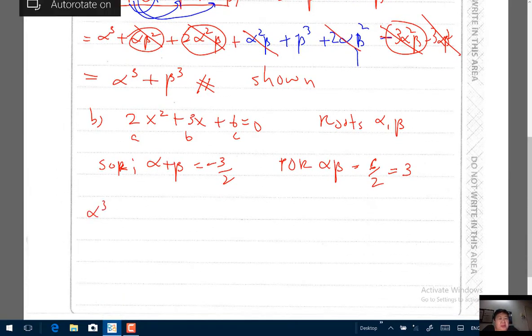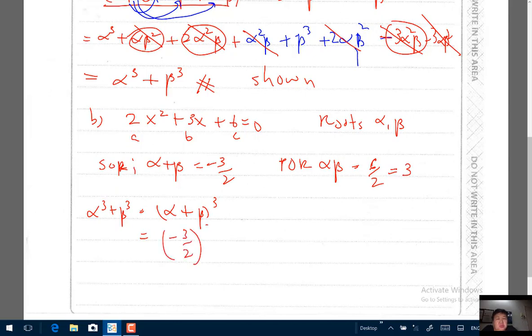So therefore your α³ + β³, you have proven in the answer above, is actually (α+β)³ + 3αβ(α+β), which is sum of roots cubed. It means (-3/2)³ plus 3 times product of roots times (α+β) times -3/2. Just substitute your sum of roots and product of roots carefully into your answer that you found in part a above.